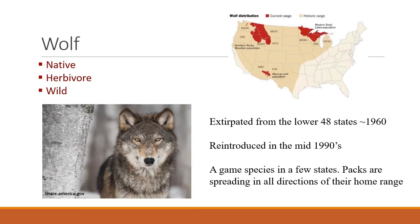An example of a large carnivore — a megacarnivore — would be a wolf. They're native and wild, and were extirpated from the lower 48 states. About 1960 would have been sort of the last sighting of many wolves. They were reintroduced in the 1990s, and their reintroduction was so successful that they've become a game species in several states, including Idaho.